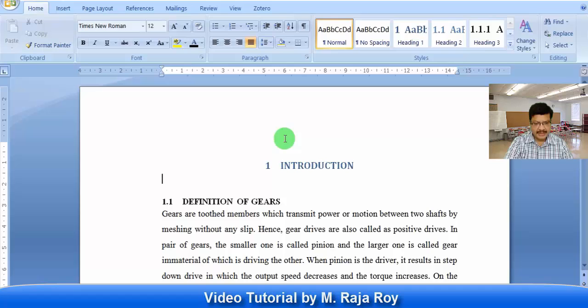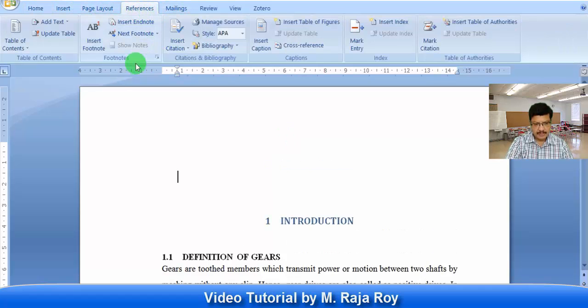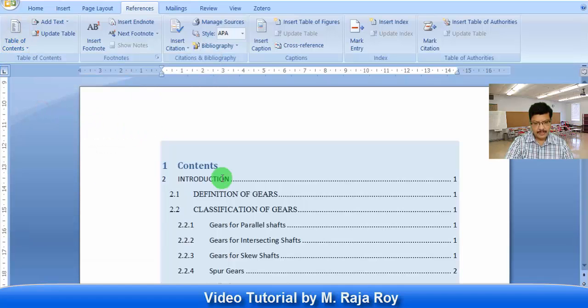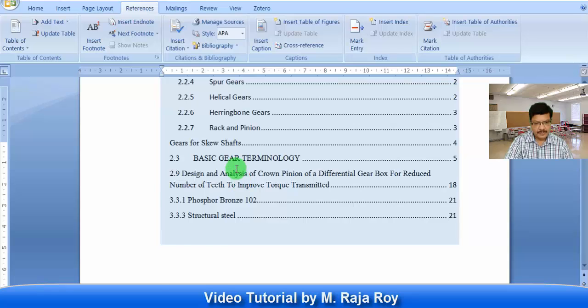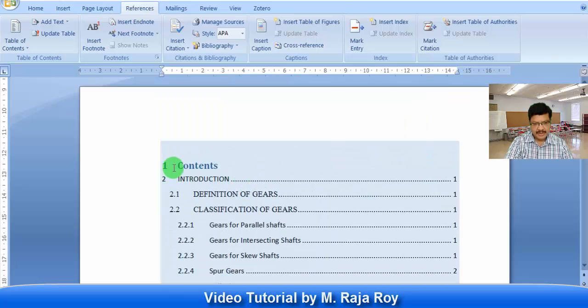Then you have to generate the content. Here go to references, then click on table of contents. This I have to do in a new page. For your explanation purpose I am doing that here. Then click on contents. Then automatically you can get the table of contents. So, in this way you can shift this to the next page. In this way you can automatically generate the contents.